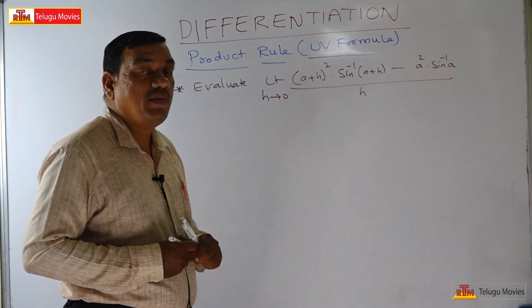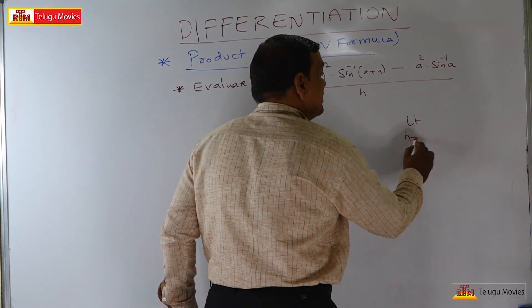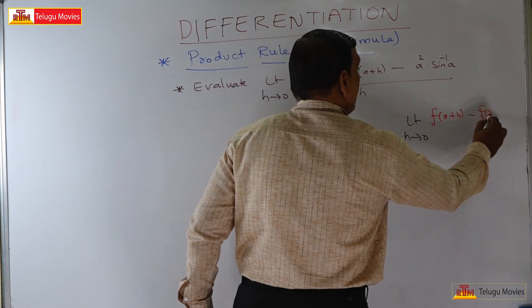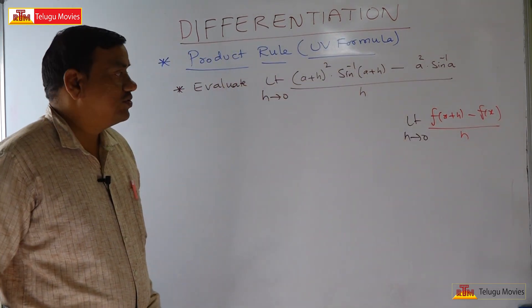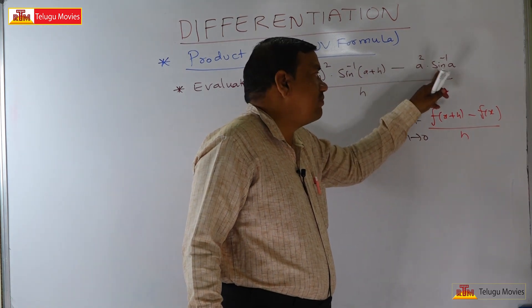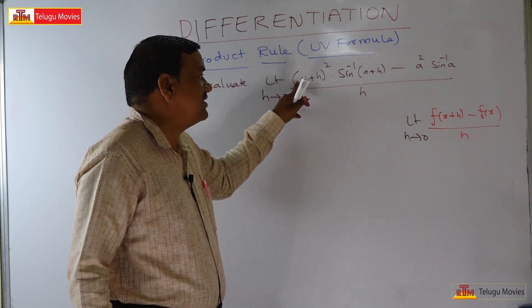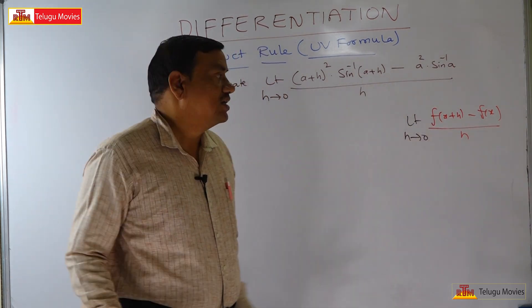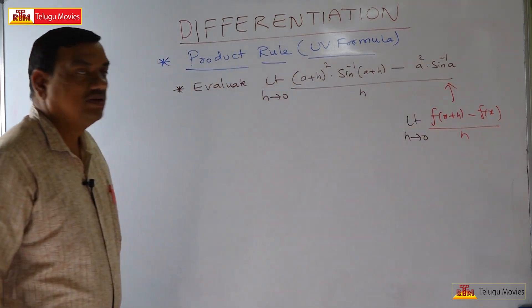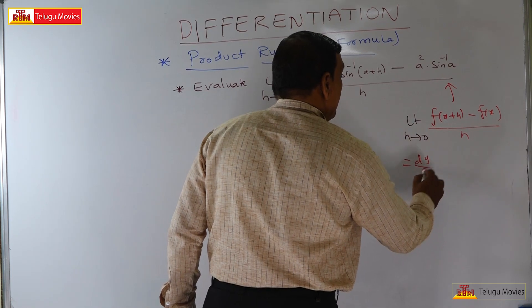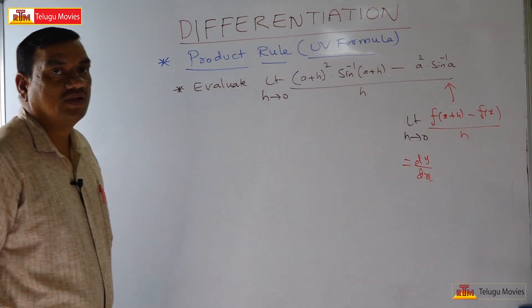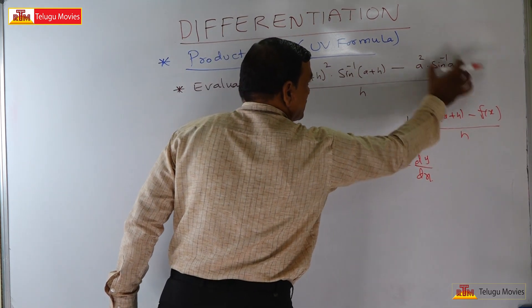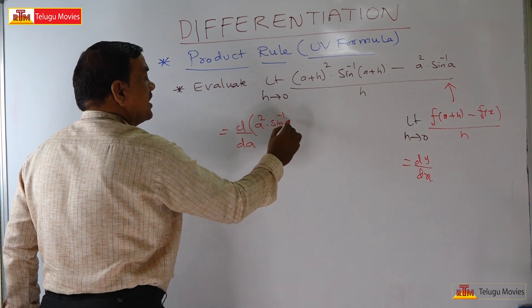The formula is: limit h tends to 0 of f of x plus h minus f of x by h. Looking at the given expression, f of x is a square into sin inverse of a. Here, f of x plus h means in place of a, a plus h is substituted. So this limit is nothing but d by da of a square into sin inverse of a, where the variable is a.